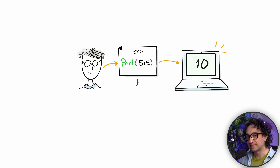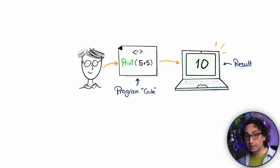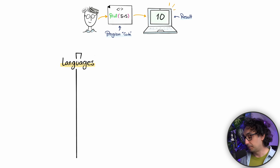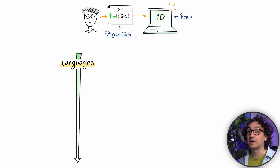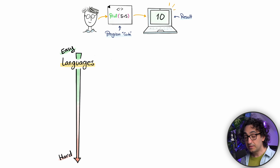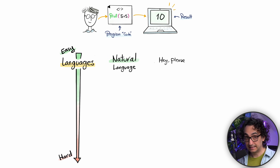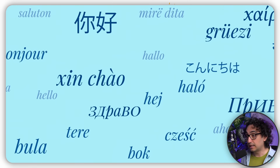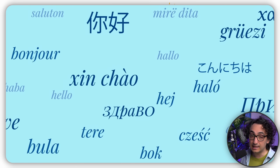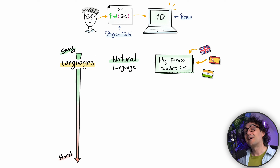A program is like a set of instructions written in a language the computer can follow. But not all languages are the same — some are made for people and others are made for machines. At the top we have natural languages like English, Spanish, and Hindi. They are easy for us but far too complex for a computer to understand.